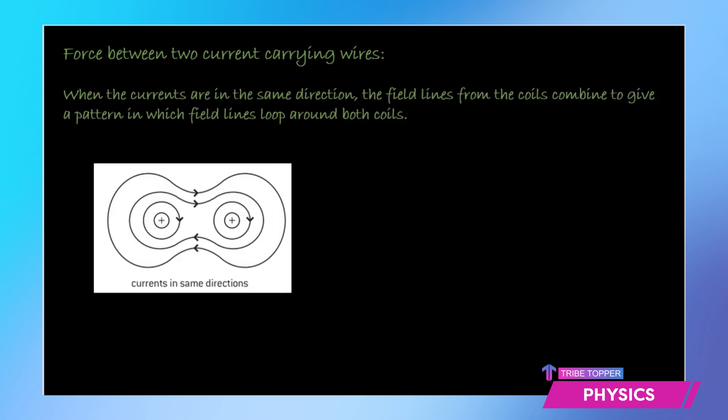Force between two current-carrying wires in the same direction: the field lines from the coils combine to give a pattern in which field lines loop around both the coils. You see here, the field lines that we get are looping around both the coils.